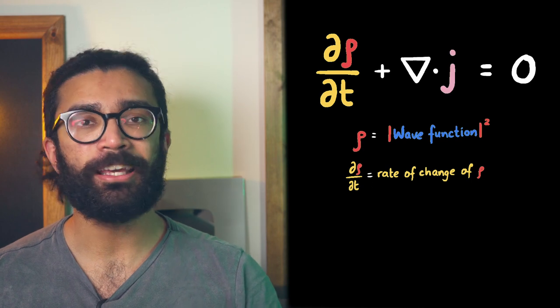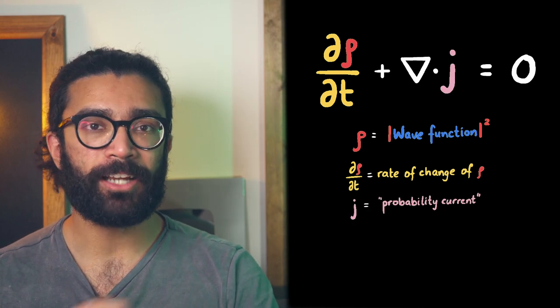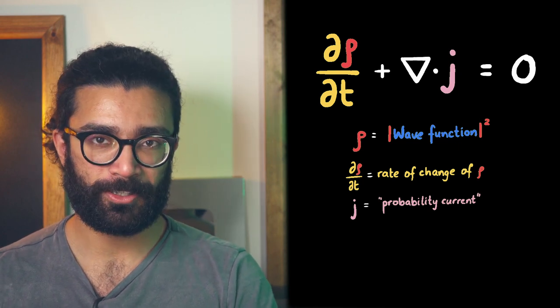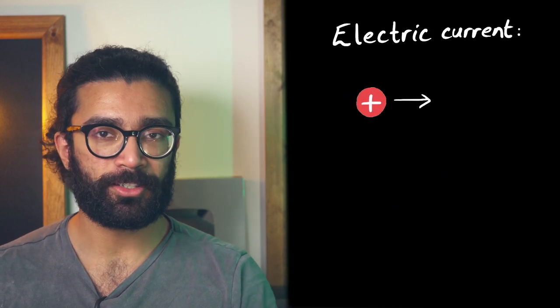Thirdly, let's look at this term here, j. j represents what is known as the probability current. We might have heard the term current used in a different context, when describing electric current. That represents the motion of charged particles.